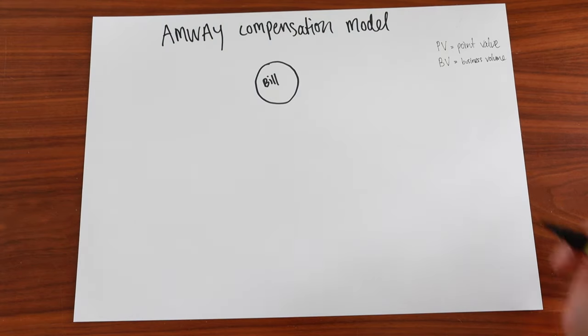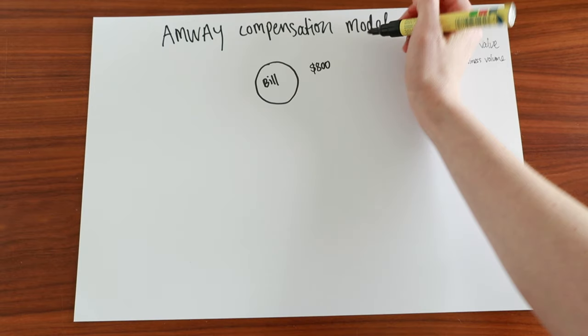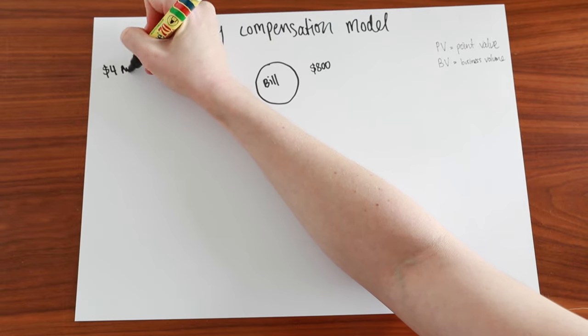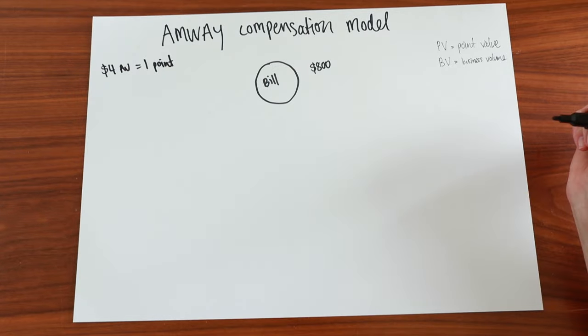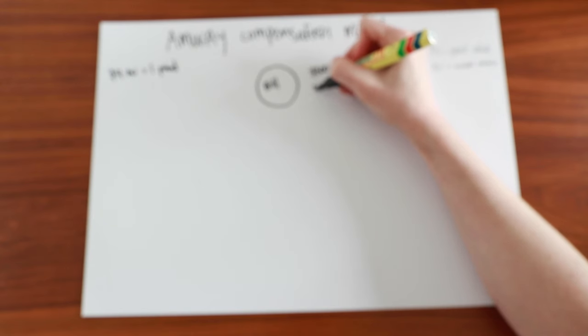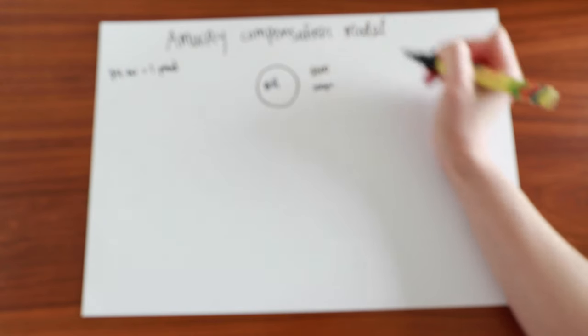This is Bill. Every month, Bill spends $800 on Amway products, which is a lot, I know, but bear with me for this example. For every dollar value, there is a point system. So four Australian dollars is one point, and that's the basis of this whole point system. So each month, Bill spends $800 and that is 200 PV, point value.